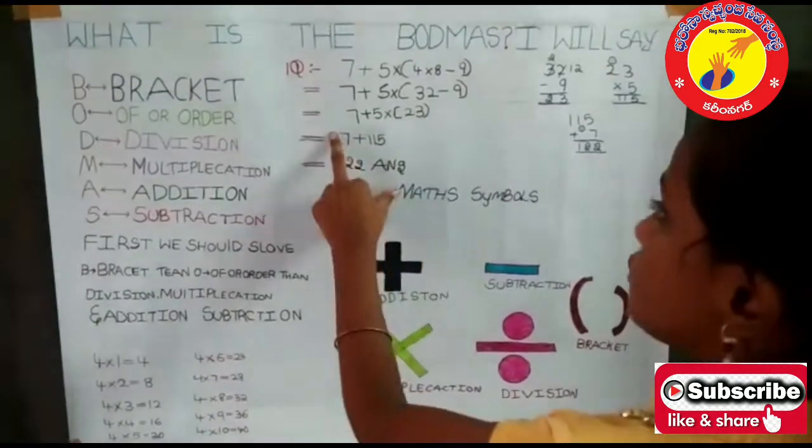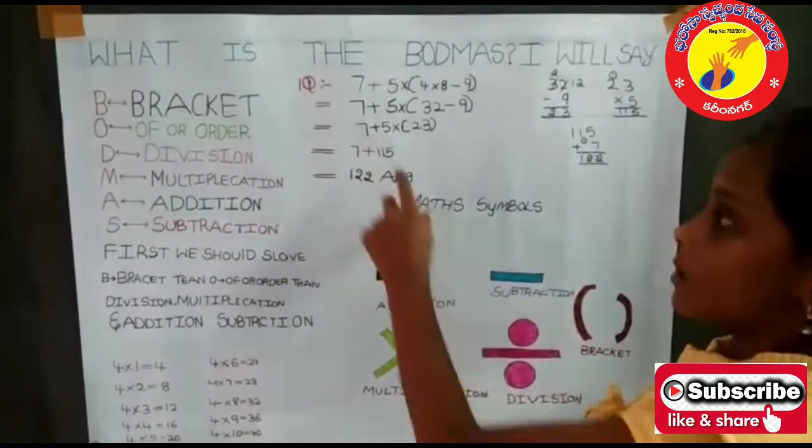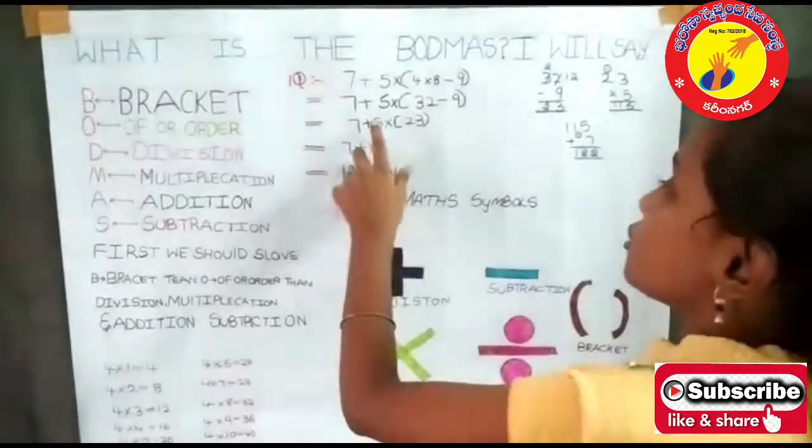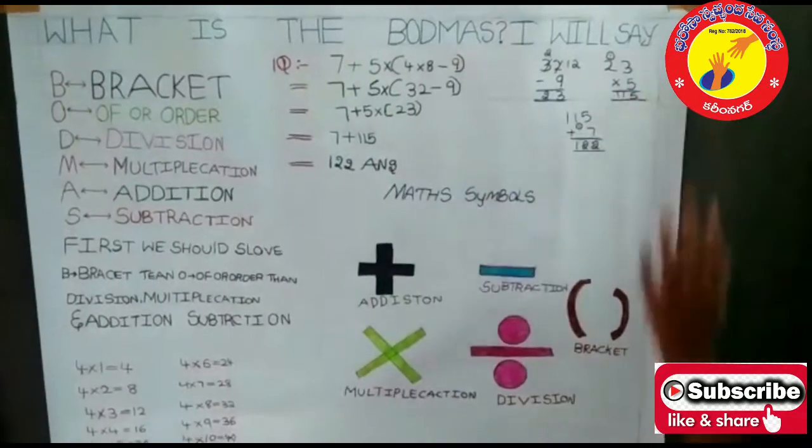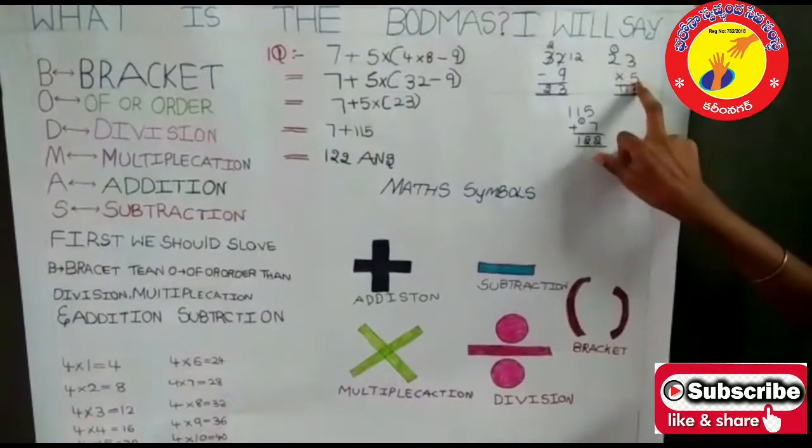Then next we should write only 7 plus, because here these 2 problems are there for us. So 5 into 23. So here you see 5 into 23 I written here. So 23 into 5.